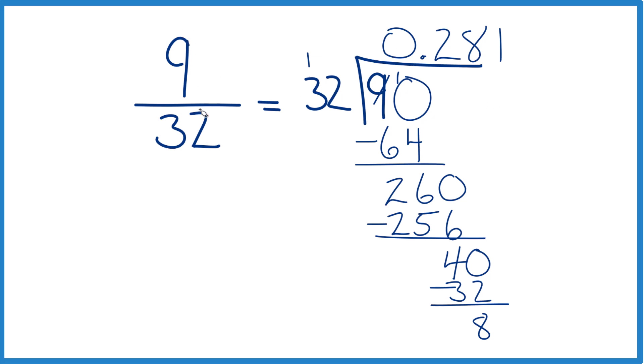But that's how you convert 9 32nds, the fraction, to a decimal. This is Dr. B. Thanks for watchin'.